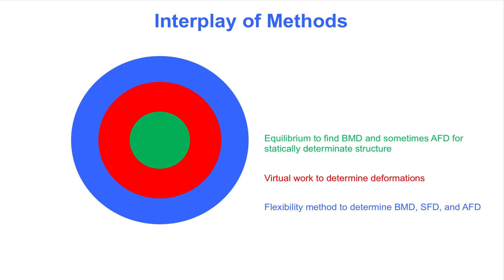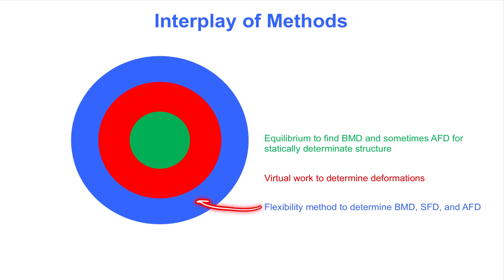At the core, equilibrium is applied to the determinate cut structure in order to find bending moment diagrams. Remember, equilibrium alone is insufficient for the analysis of statically indeterminate structures. Next, the unit virtual work method is employed to determine deformations at the locations where the structure was cut. Finally, the flexibility method pulls everything together to determine the final internal force diagrams for the original structure.